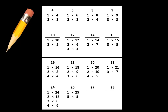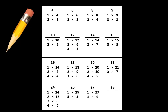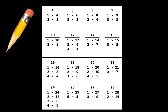Let's move to the number 27. On your paper, write that we can think of 27 as 1 x 27 or 3 x 9. Let's move to the number 28. On your paper, write that we can think of 28 as 1 x 28 or 2 x 14 or 4 x 7.